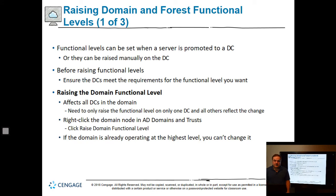Functional levels can be set when a server is promoted to a DC, or raised manually on the DC. Before raising functional levels, ensure the DCs meet the minimum requirements — otherwise you could have a problem. To raise the functional level, go to Active Directory Domains and Trusts, Sites and Services, or use PowerShell.